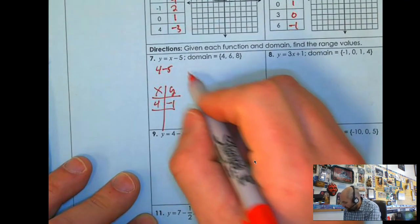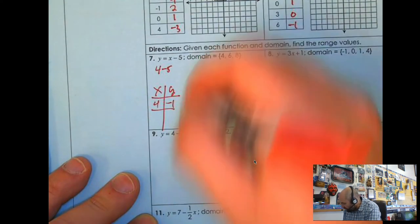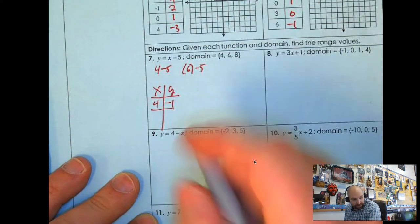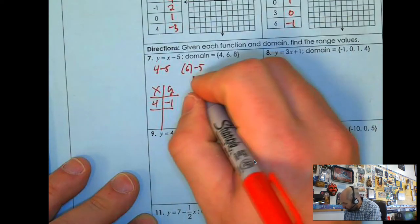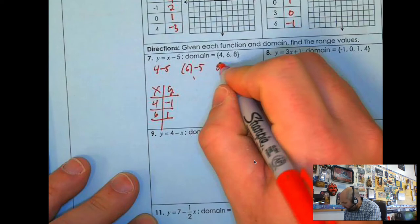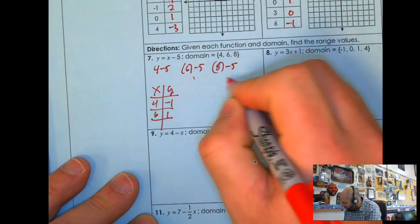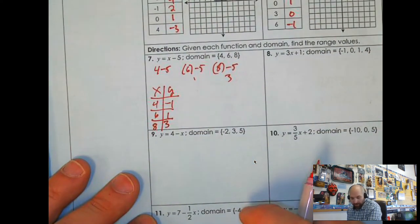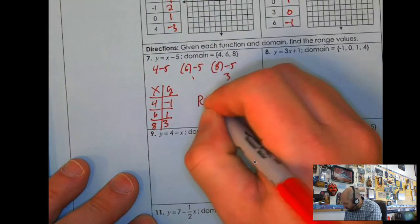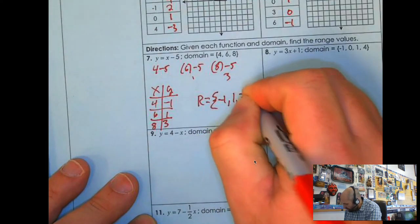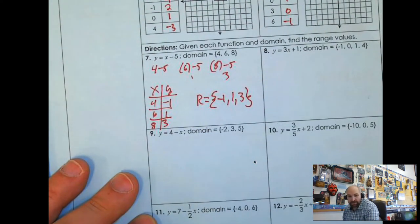Then I'm going to do 6 minus 5. When I do 6 minus 5, I get 1. So I'm going to do a 6 and a 1. And then I'm going to do 8 minus 5, which gives me 3. So if I plug in 8, I get an output of 3. So my range will be negative 1, 1, and 3. That's easy enough, right?